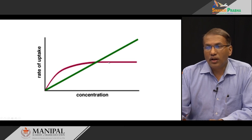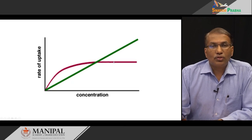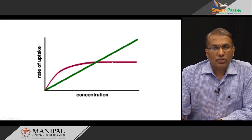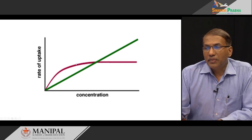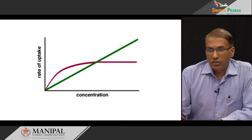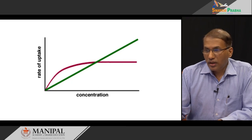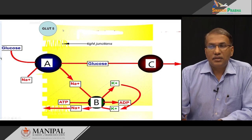At one point it no longer increases the rate of absorption. This is very important because glucose being a very hygroscopic molecule, if there is a rapid influx of glucose into the system it can endanger our life. This is a very beautiful design of nature wherein it limits the rate of absorption no matter how much glucose you take in your diet. GLUT5 in the initial phase does help in absorption, but it has a limit.